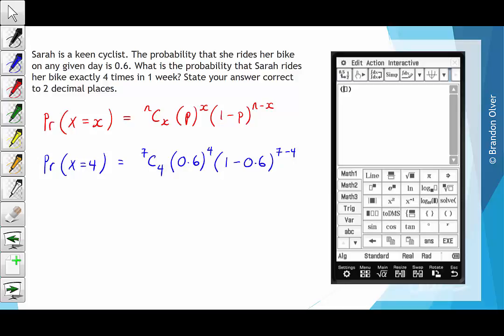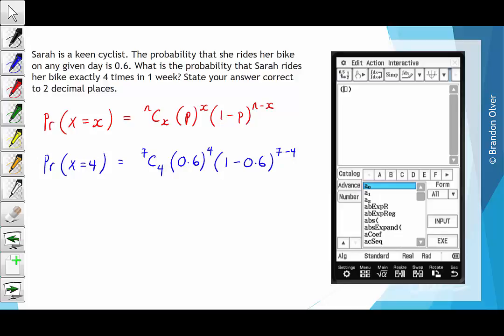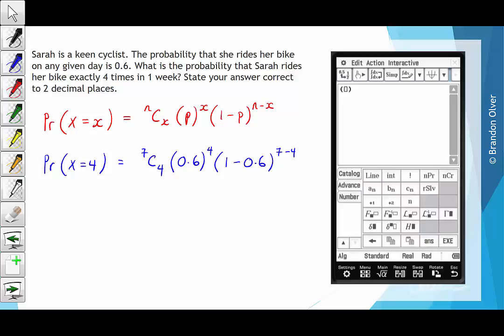First of all, we want to find the combinations command. So if we go into the advanced catalogue, we can use nCr, and then we want 7 trials and 4 of those to be a success. Next, we multiply that by the probability of success, which is 0.6, and we raise that to the power of the number of successes we want, which is 4.